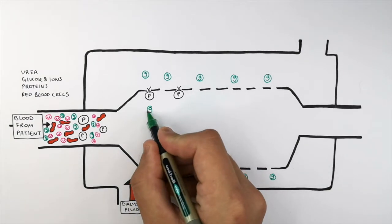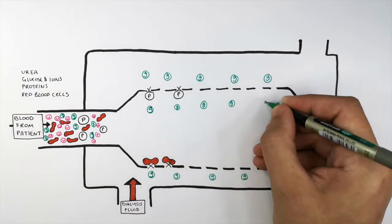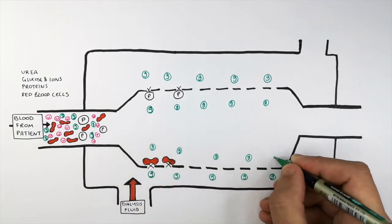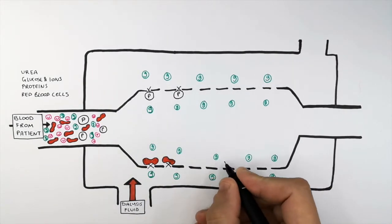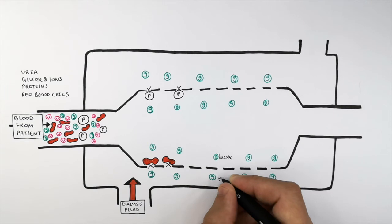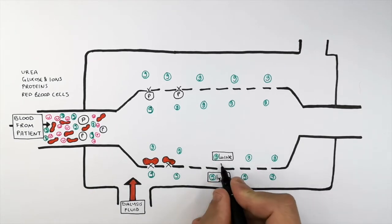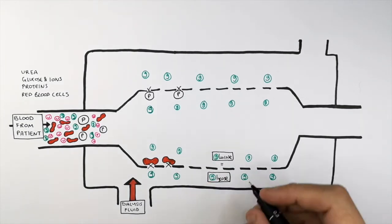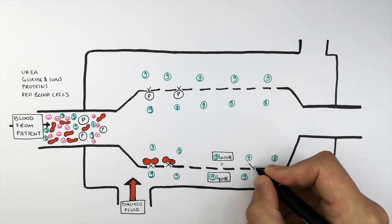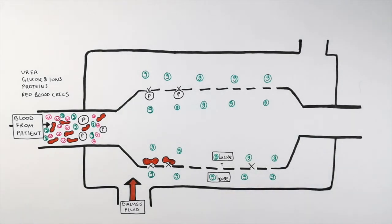The glucose will also remain in the blood and not exit into the dialysis fluid. This is because the glucose in the dialysis fluid is at the same concentration as the glucose in the patient's blood. That means there is no movement of glucose in or out of the blood, because diffusion requires a concentration gradient. If there is no concentration gradient, glucose cannot diffuse from high to low concentration.